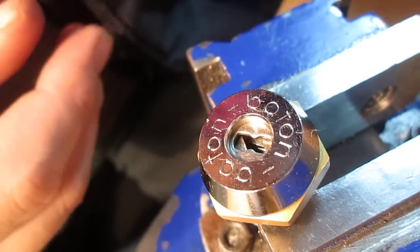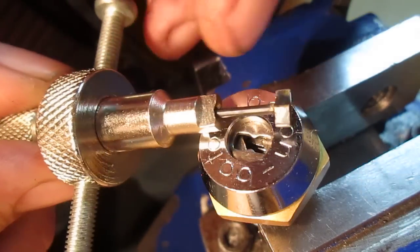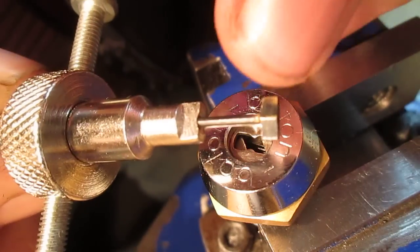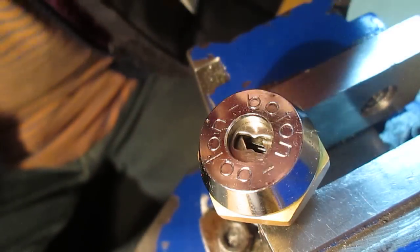You can get Chinese disc detainer picks that look a bit like this but tension from the rear, but you can't use those because this pickhead's too fat.